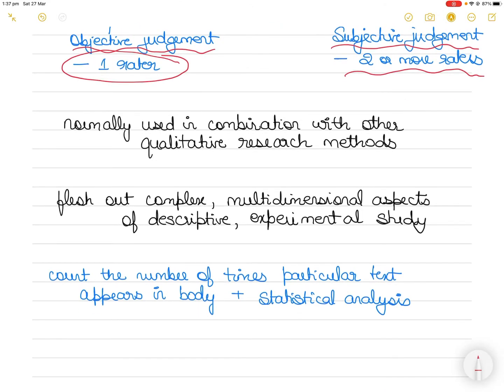Content analysis does not always have to be a standalone research method. For example, a systematic content analysis might be an integral part of the data analysis in a phenomenological study.